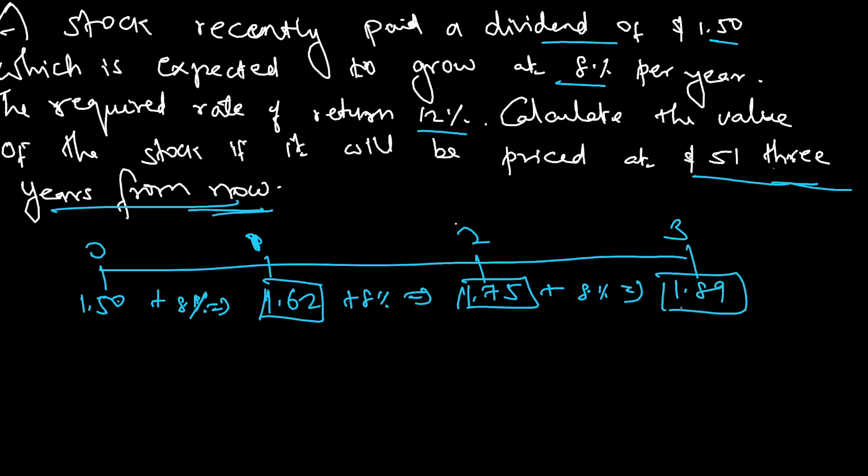This is the dividend that I can expect from this company and at the end of the third year it will be sold for $51. So these are the cash flows: $51.